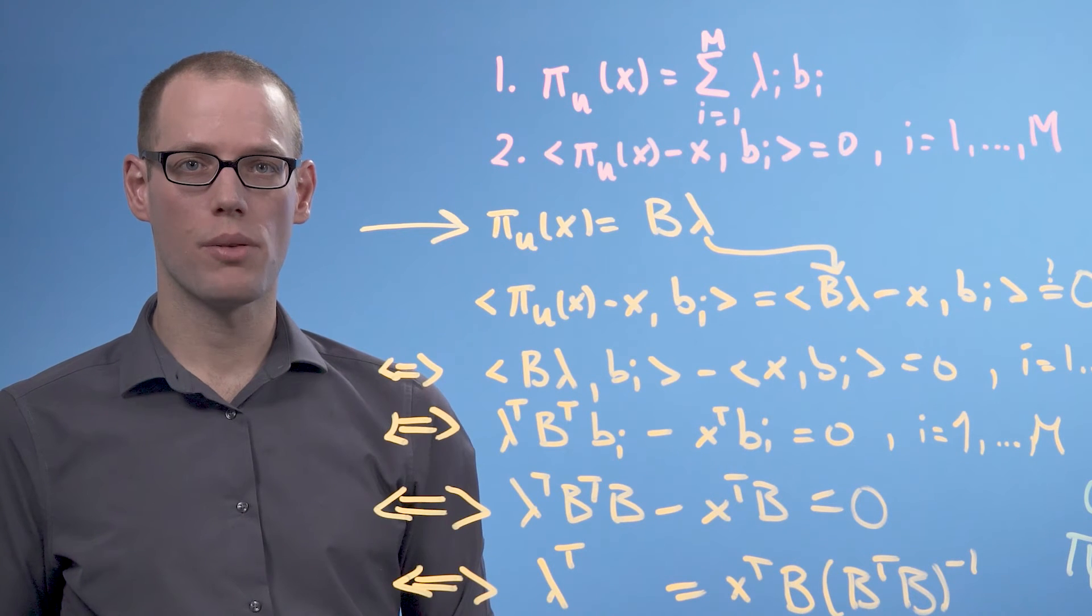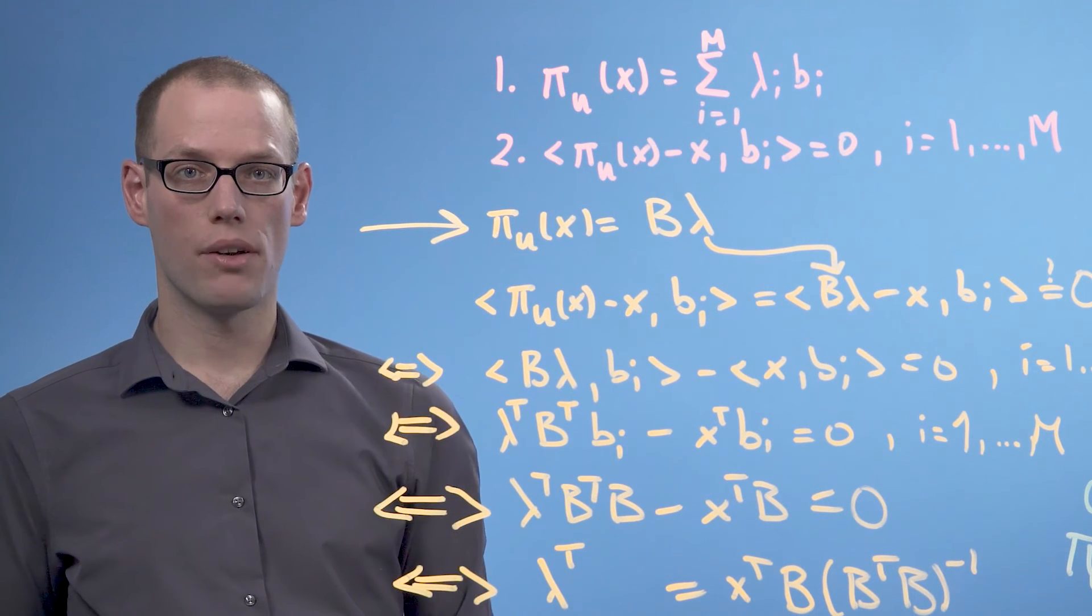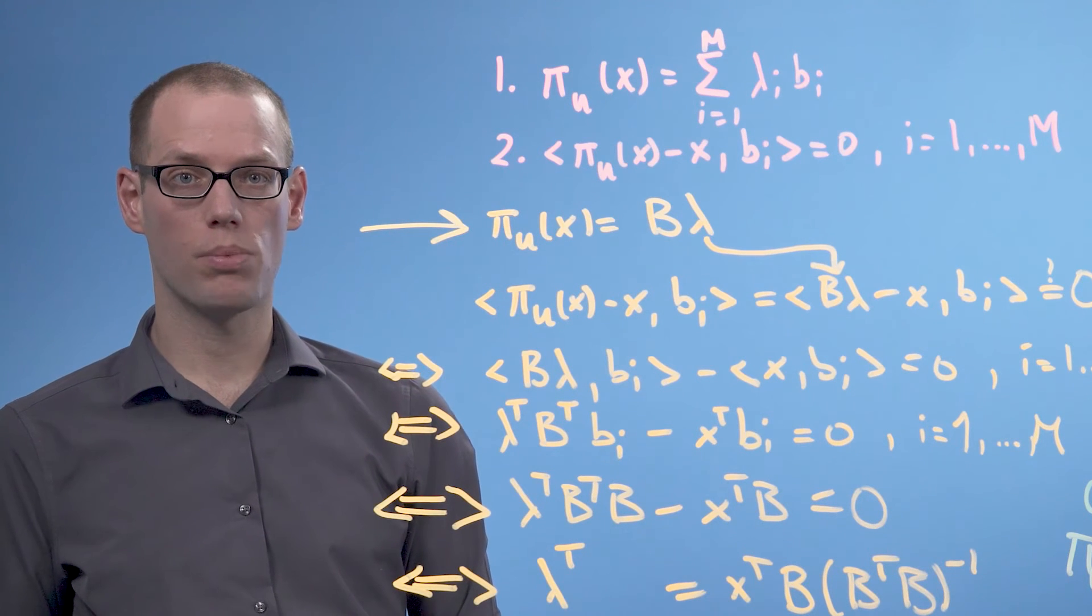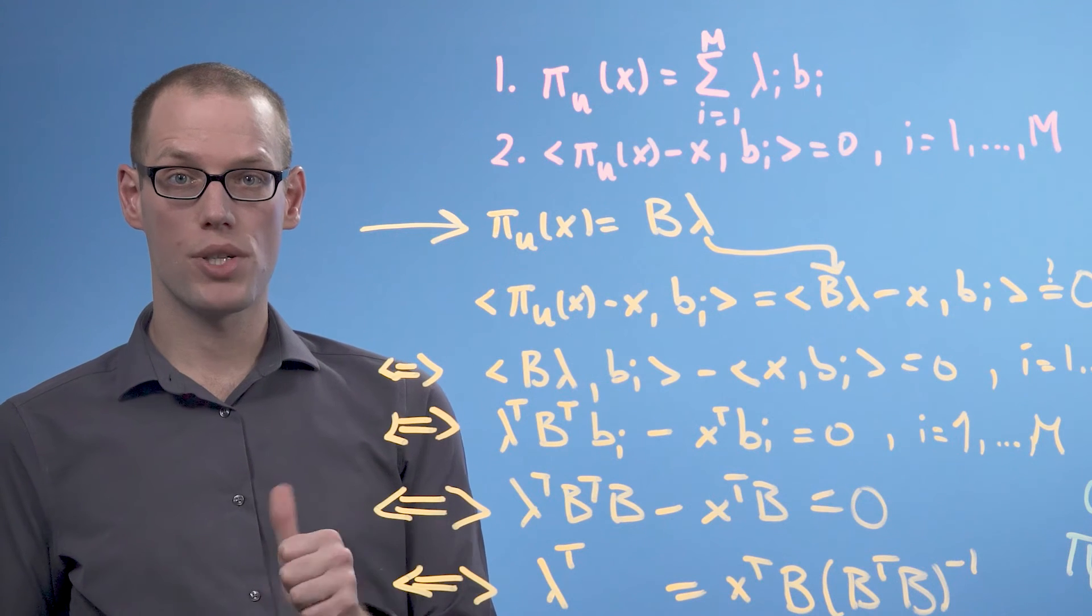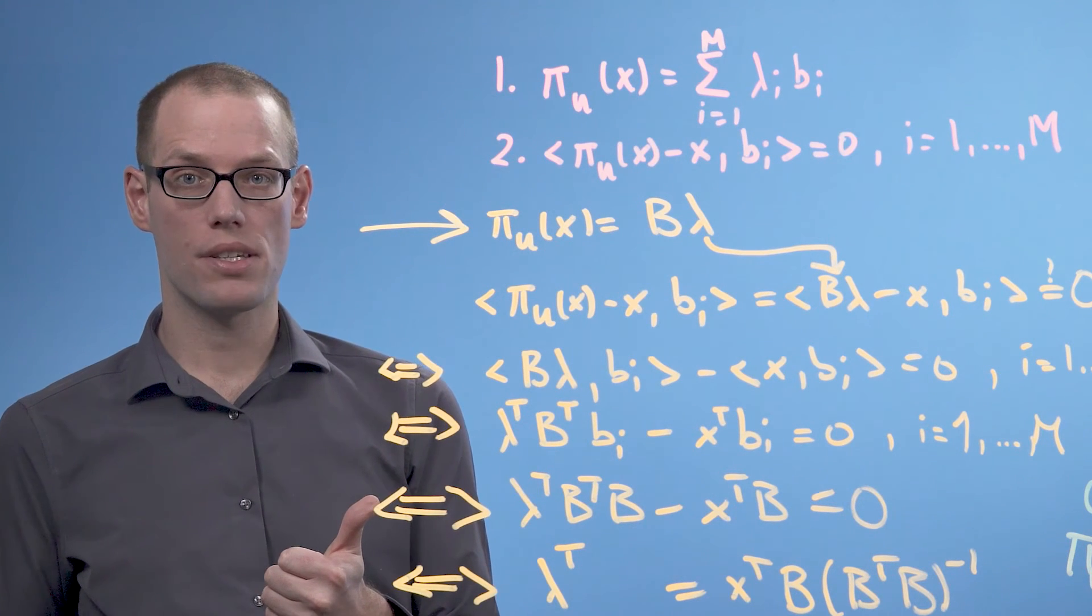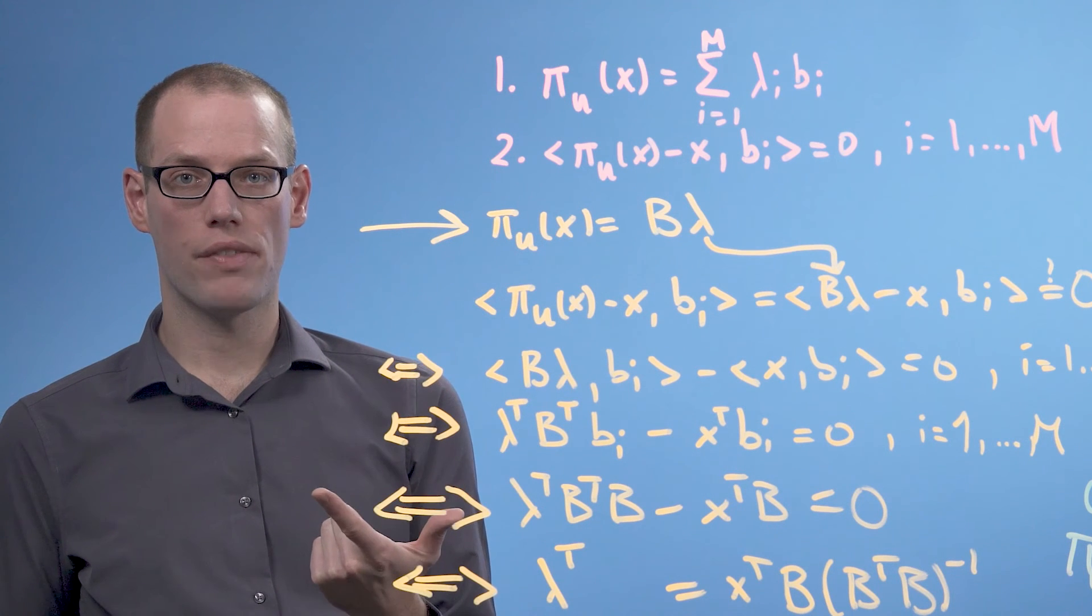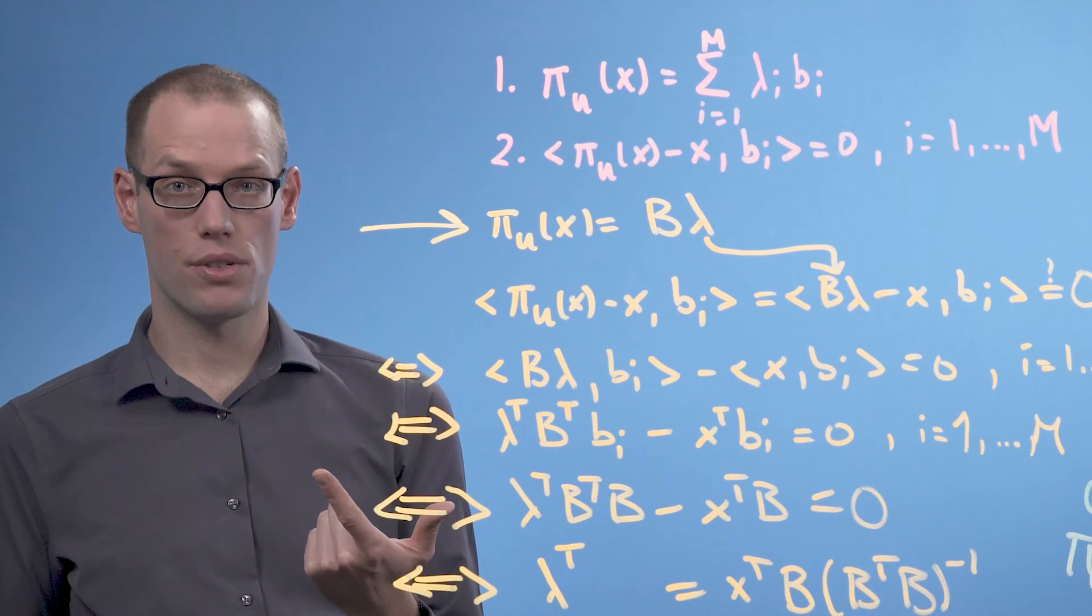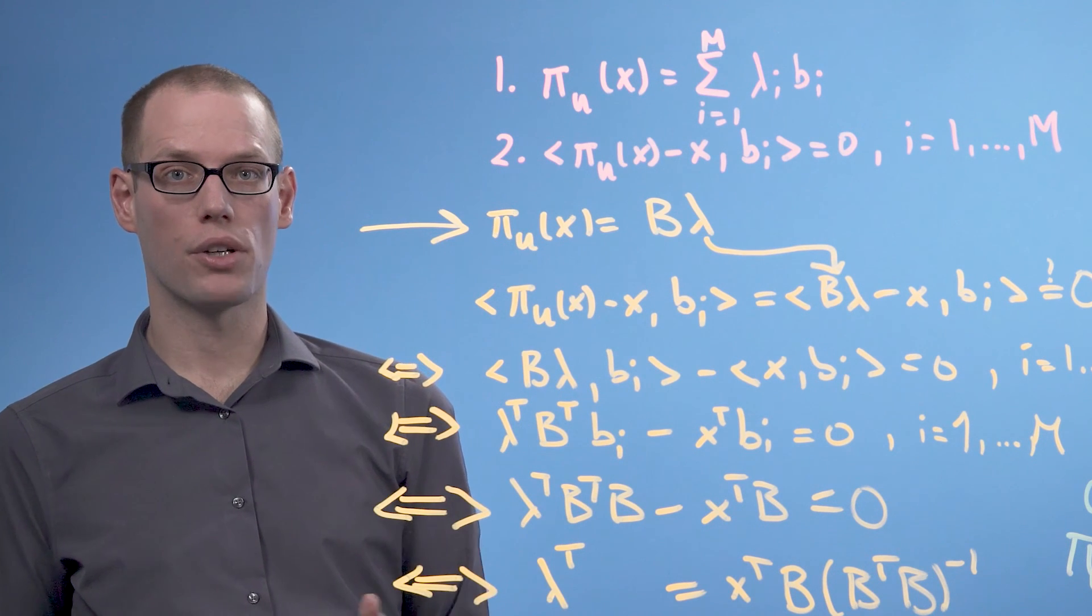In this video we looked at orthogonal projections of a vector onto a subspace of dimension m. We arrived at the solution by exploiting two properties. We must be able to represent the projection using a linear combination of the basis of the subspace. And the difference vector between the original vector and its projection is orthogonal to the subspace. In the next video we're going to look at a concrete example.